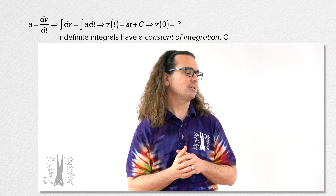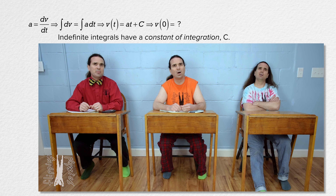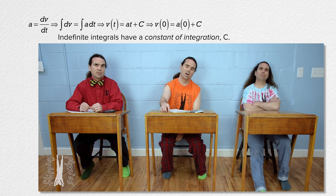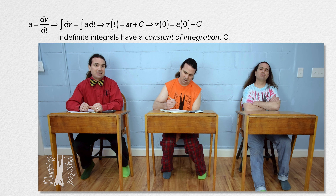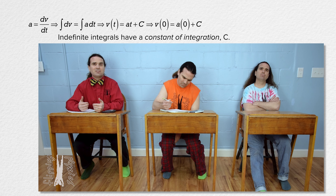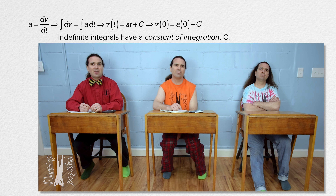Billy, please do that. To determine the value of the velocity function at time equals zero seconds, we plug zero in for time. When we do that, we get the velocity at zero seconds equals just the constant of integration, capital C.